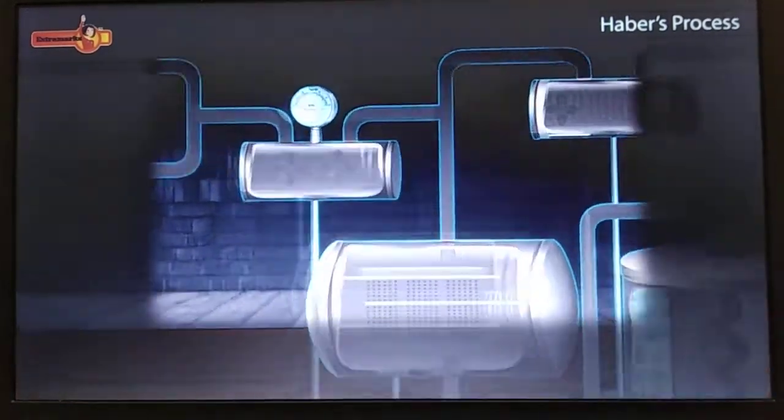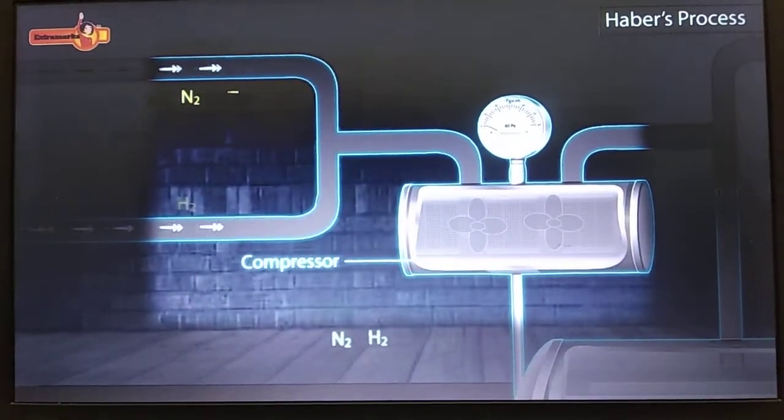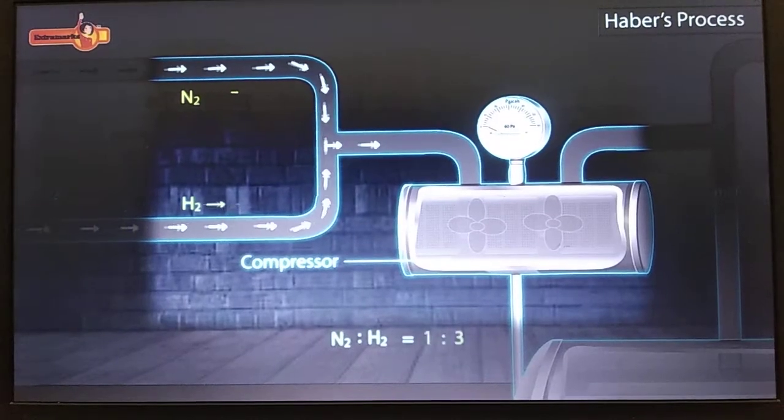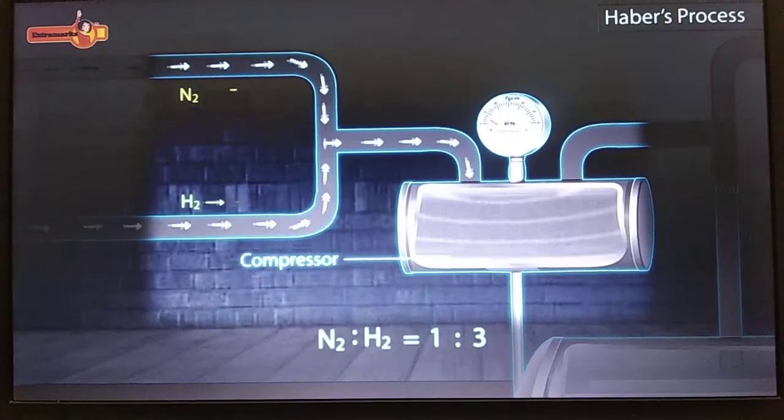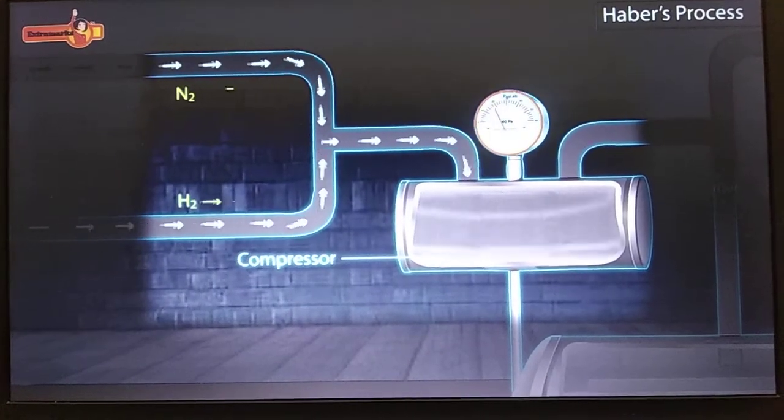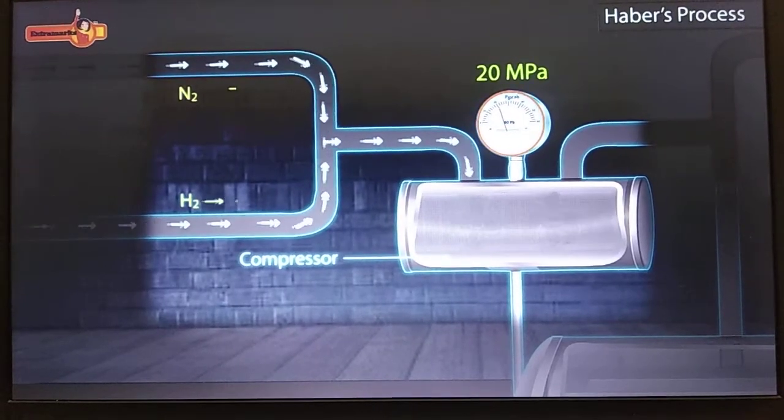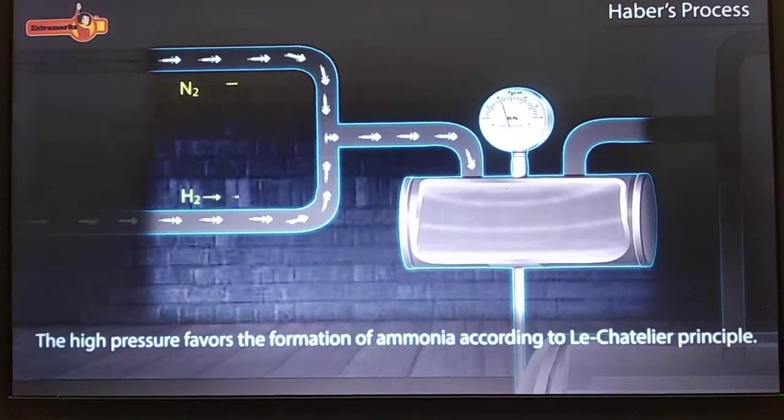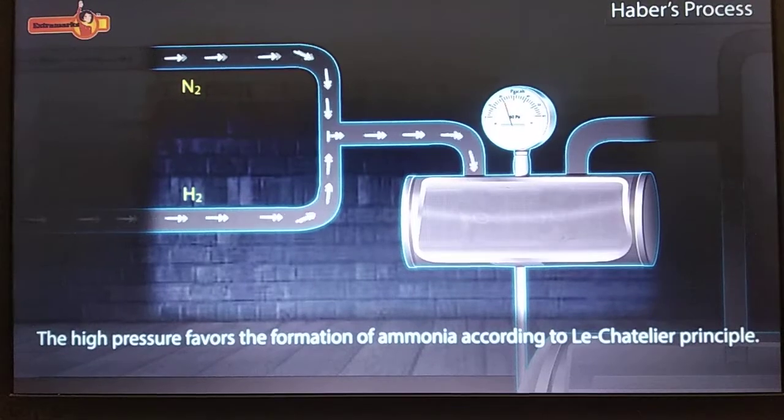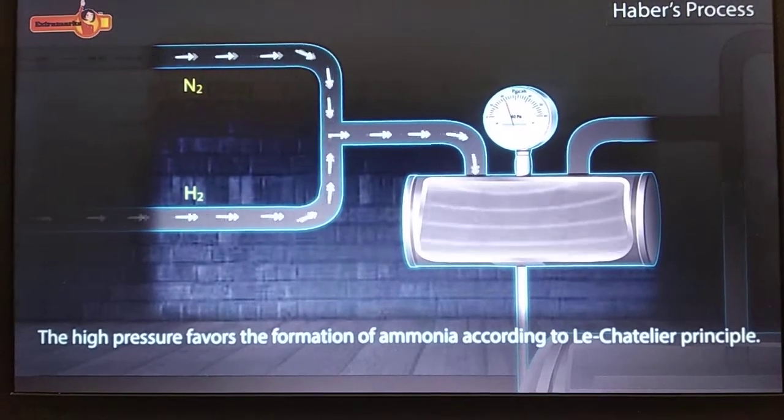In this process, first nitrogen and hydrogen are sent to a compressor in 1 is to 3 ratio. The pressure is increased to 20 MPa. The high pressure favors the formation of ammonia according to Le Chatelier's principle.